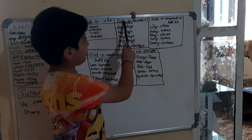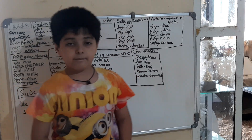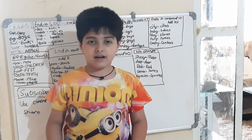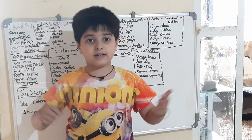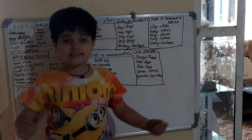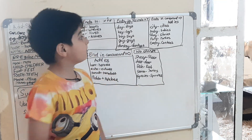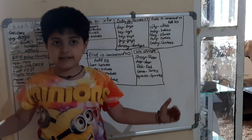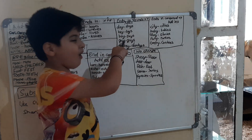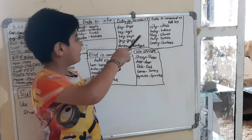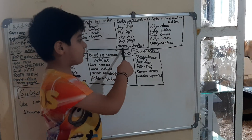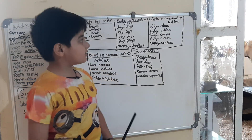We will do ending in vowel plus Y — it should end with Y, but before the Y it should be a vowel. Then we will add S. Let's take an example: day becomes days, key becomes keys, boy becomes boys, guy becomes guys, donkey becomes donkeys.